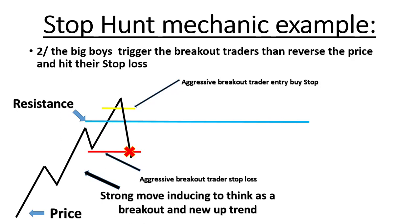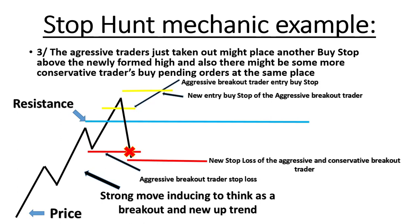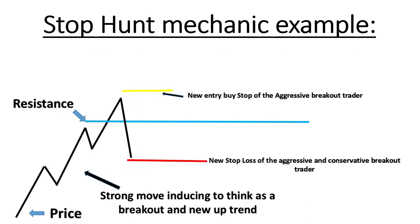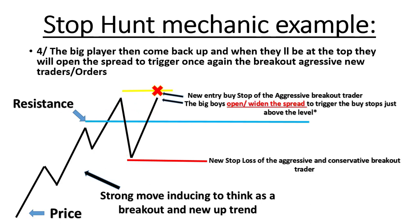Other aggressive traders will place new orders at the same level. Most of the time there are also the more conservative traders' orders there. We are talking about buy stops and sell stops. The aggressive traders place their new buy orders above the high and their stop loss at the newly created low. Once they do that, the market makers come back again to the level aggressively. Sometimes they go just a little above or just a little below, and at that level they widen the spread.